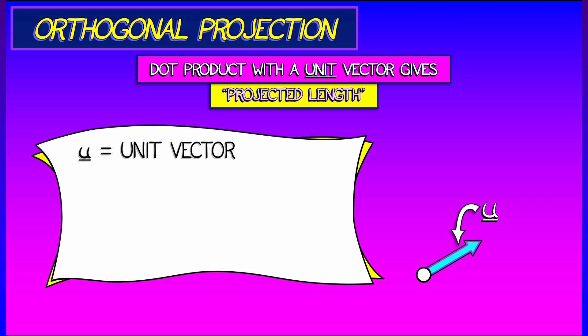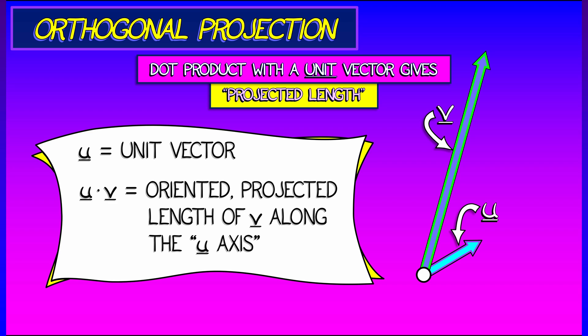So let's say you have some unit vector. Let's call it u. It's got length one. Now take some other vector. Let's call it v. What we're going to do is interpret the dot product u dot v as an oriented projected length of v along the u axis.